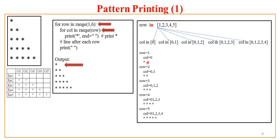So for row 1, only one star is printed. For row 2, 2 stars. For row 3, the loop iterates 3 times and 3 stars are printed. For row 4, 4 stars, and so on. You can even make this program more generalized — if the user inputs 7, the pattern will have 1 star on the first line and 7 stars on the last. I suggest you try this pattern printing program.